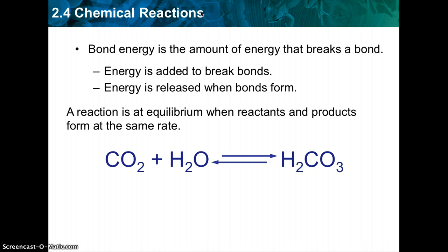When a reaction is at equilibrium, the reactants and products form at the same rate. The arrows in the equation show the reaction going both ways. When carbon dioxide concentrations are high, like typically in our cells, the reaction moves towards the right, so carbon dioxide and water yields carbonic acid. However, in our lungs, carbon dioxide concentrations are low, so the reaction goes the opposite direction, where carbonic acid breaks down into carbon dioxide and water. Equilibrium is when both the reactants and products are made at the same rate.